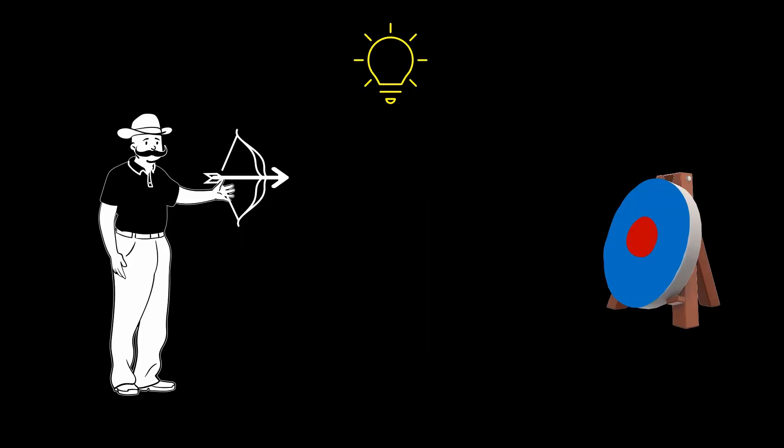I've created an analogy to help further understand this. Imagine shooting arrows at a target. There's an 80% chance you'll miss, a 15% chance of hitting the blue, and a 5% chance of hitting the red.